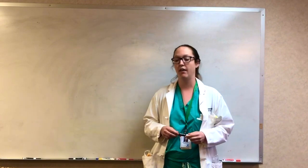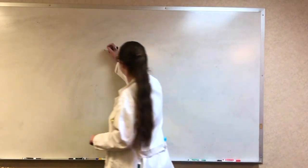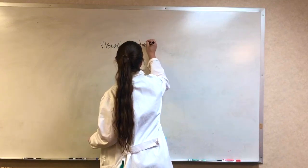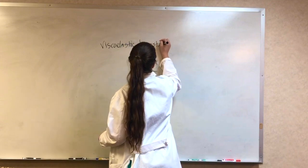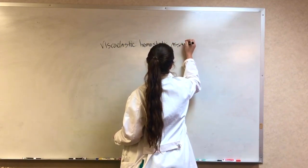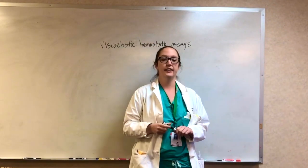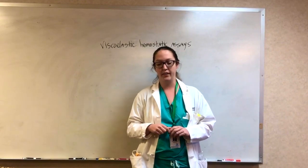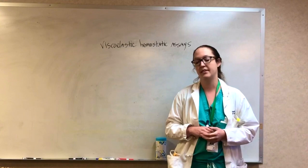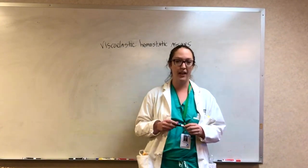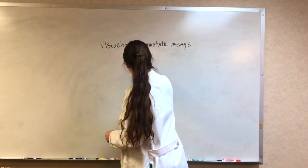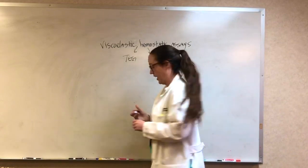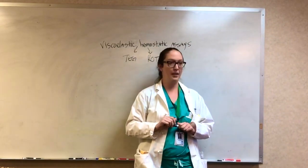So in response to that, now there's been increasing adoption of viscoelastic hemostatic assays. Viscoelastic hemostatic assays are whole blood assays that actually give us kinetic properties of clot formation. And there are famously two types of viscoelastic hemostatic assays: there's TEG, or thromboelastography, and ROTEM. And ROTEM is a rotational thromboelastography.